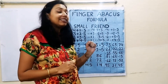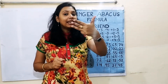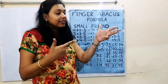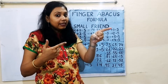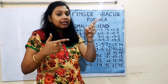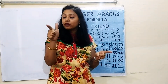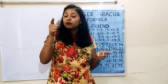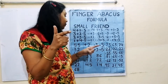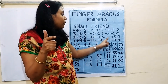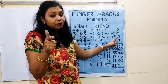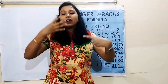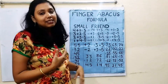Next question: 86 minus 72. We set up 86 and subtract 70, then minus 2. We cannot subtract 2 directly — closing one finger gives minus 1, closing the thumb gives minus 5. So we use the formula for minus 2: plus 3 minus 5 — open 3 fingers and close the thumb. The answer is 14.